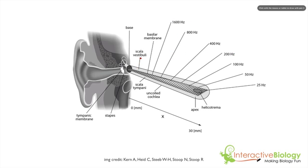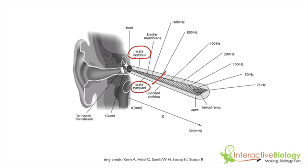Now, there are a few things I want you to pay attention to in this episode that we did not cover before. Here we have the scala vestibuli — that's the cavity at the top — and below the basilar membrane, we have the scala tympani, which is the cavity at the bottom of the cochlea beneath the basilar membrane. What I'm going to do next is take a cross-section, cutting straight through the cochlea, and we're going to look at a cross-section of the cochlea.